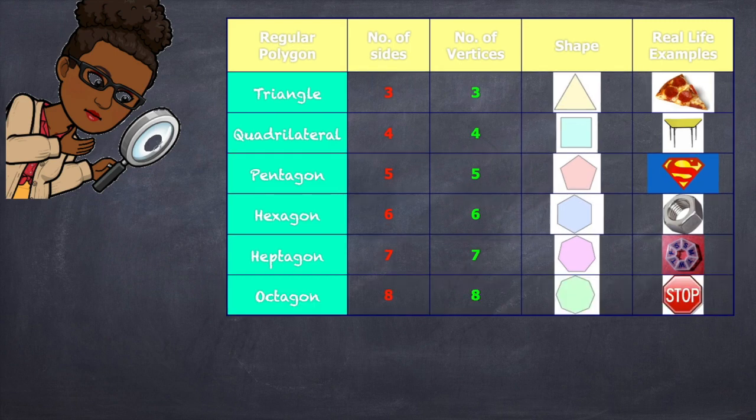Octagon. The word octo means eight. Therefore, it has, you guessed it, eight sides and eight vertices. And I'm sure we've seen that as we drive down the road and walk along the street. We all know what a stop sign looks like.